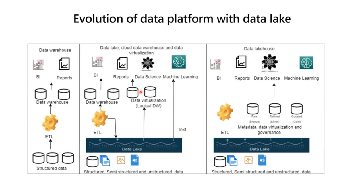Let's look at the evolution of the data platform with the data lake. Traditionally, all data needed for BI and reporting came from structured data sources stored in traditional databases, and we used ETL pipelines to merge and transform data to data marts or data warehouses. Now the data is coming from everywhere — structured, semi-structured, and unstructured sources — and the size of data has grown, increasing the cost of storing and processing data using relational databases. Cloud data warehouse solutions are built with compute and storage separation so you can independently scale storage and compute to process large amounts of data quickly.